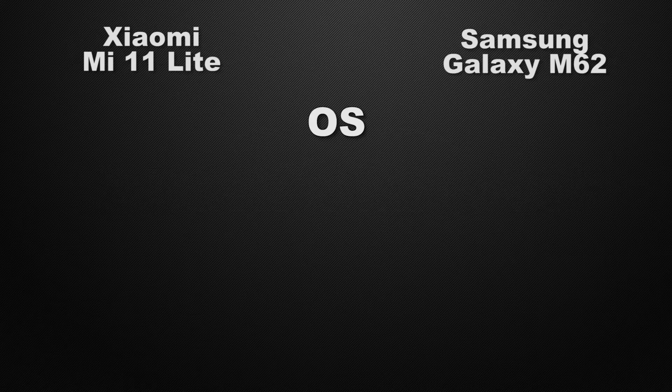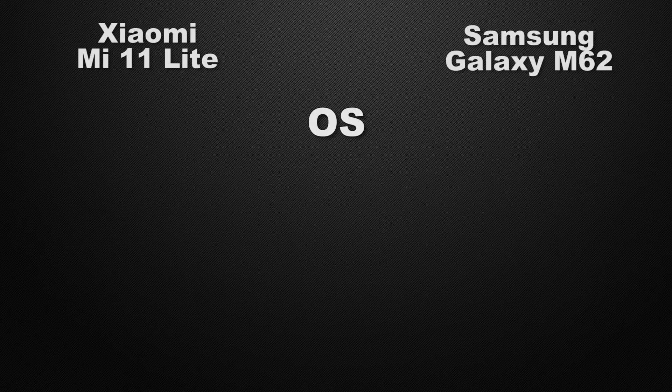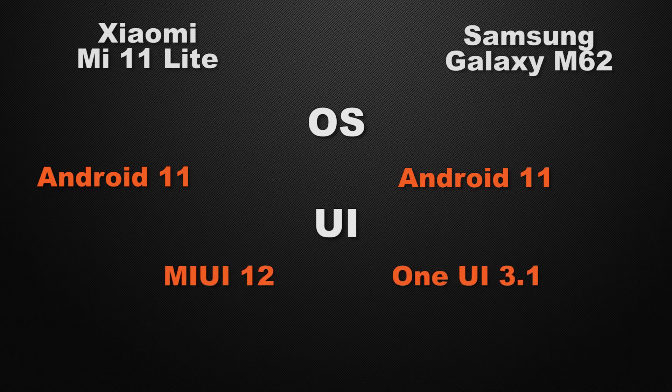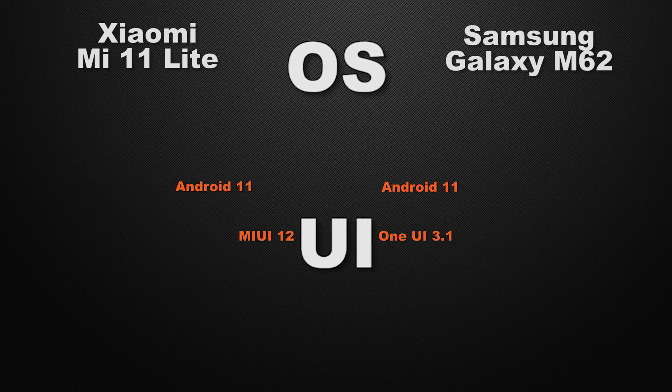Moving to the performance of the devices, let's start with the operating system. Both the 11 Lite and M62 have Android 11 support, so it's a tie. For the user interface, the 11 Lite has MIUI whereas the M62 comes with One UI. It's a tie here because both have different UIs, so it's up to you which UI you prefer.